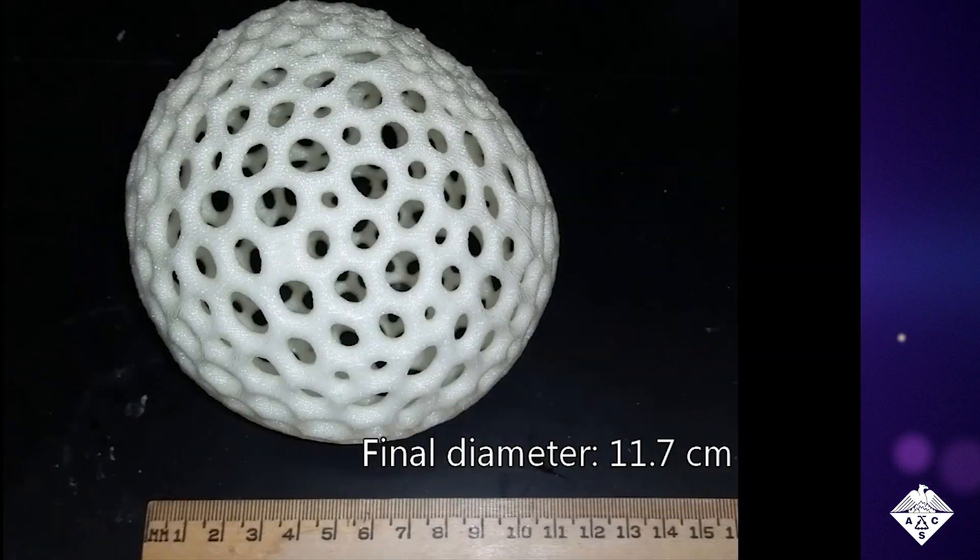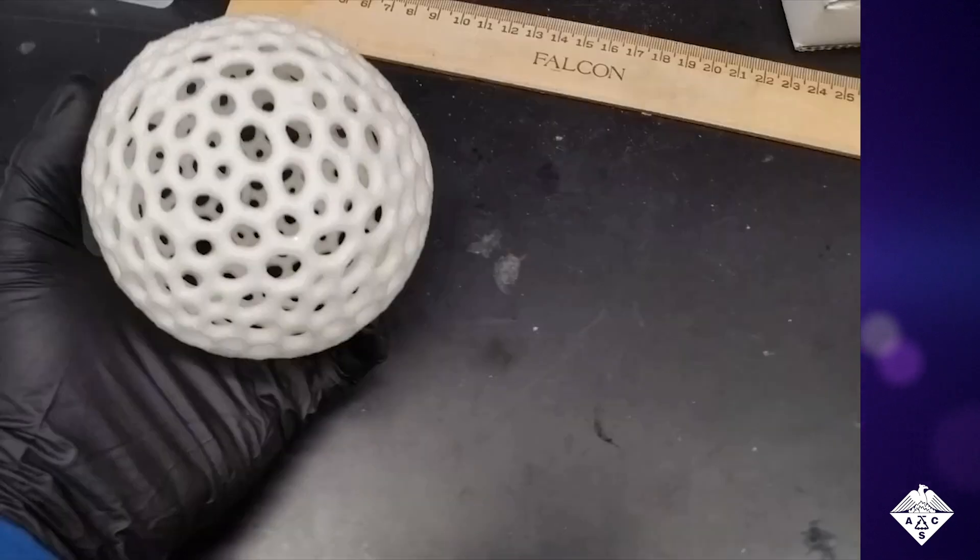This created a porous polystyrene foam-like material that was up to 40 times larger in volume than the original printed object.